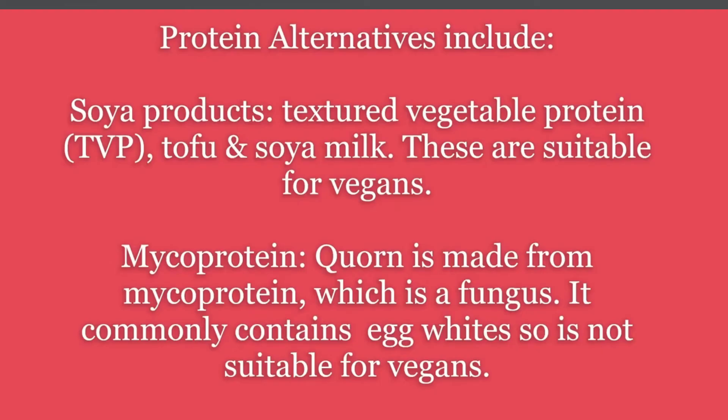For people who choose not to eat meat or dairy products, there are protein alternatives. These include soya products such as textured vegetable protein, tofu, and soya milk, which are suitable for vegans. Quorn is made from mycoprotein, a type of fungus; however, it commonly contains egg whites, so it is not suitable for vegans.